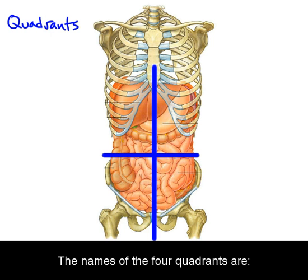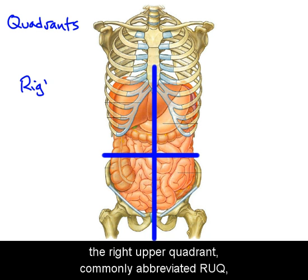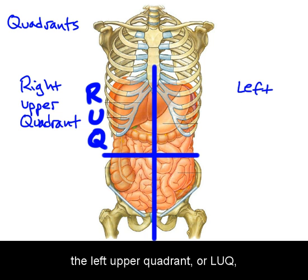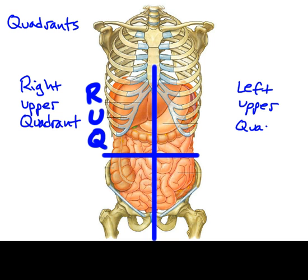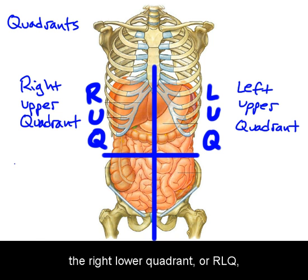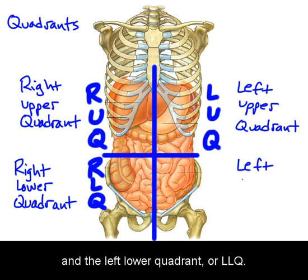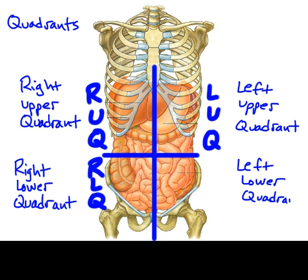The names of the four quadrants are: the right upper quadrant, commonly abbreviated RUQ; the left upper quadrant, or LUQ; the right lower quadrant, or RLQ; and the left lower quadrant, or LLQ.